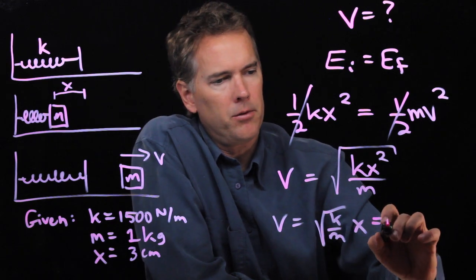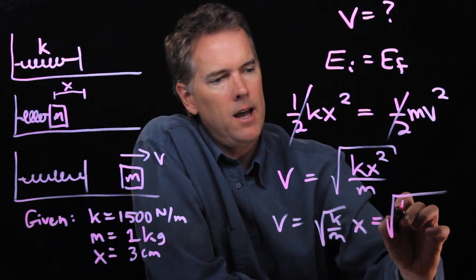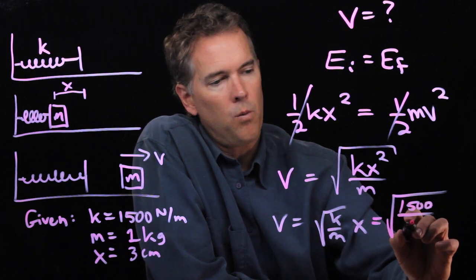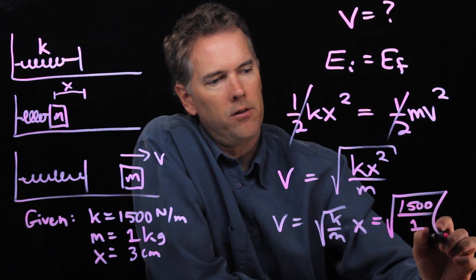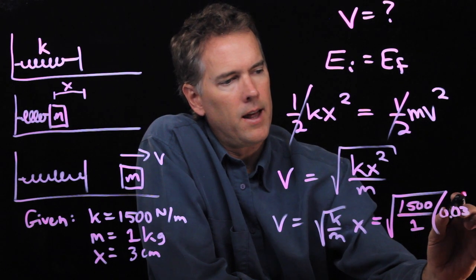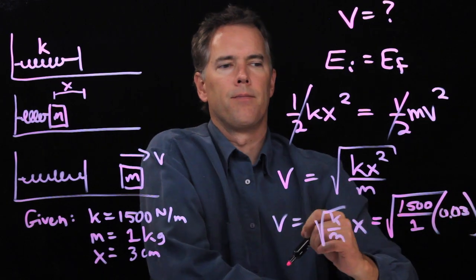Now we can plug in some numbers, right? We've got the square root of k, which we said was 1500. m is just one. And then this is multiplying x, three centimeters, but in SI units, that's 0.03.